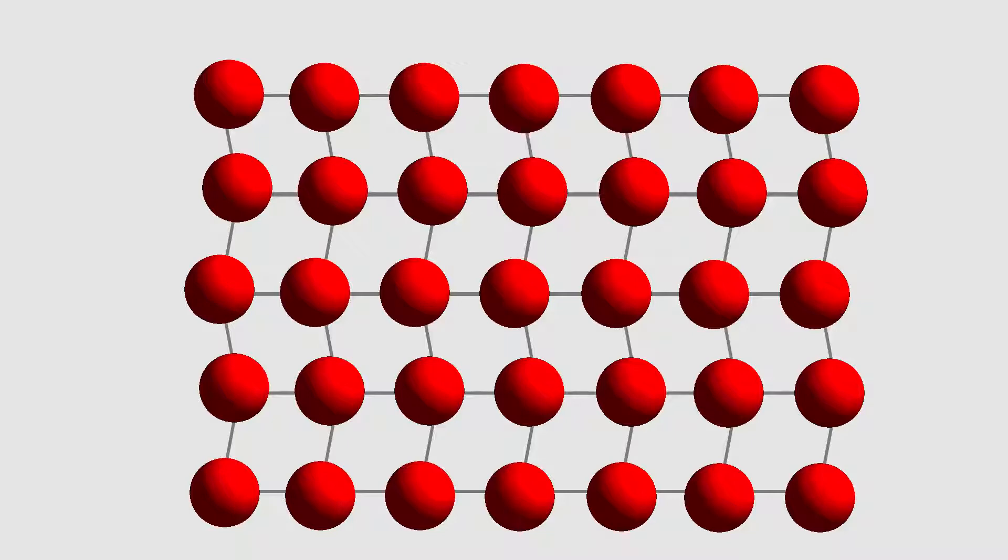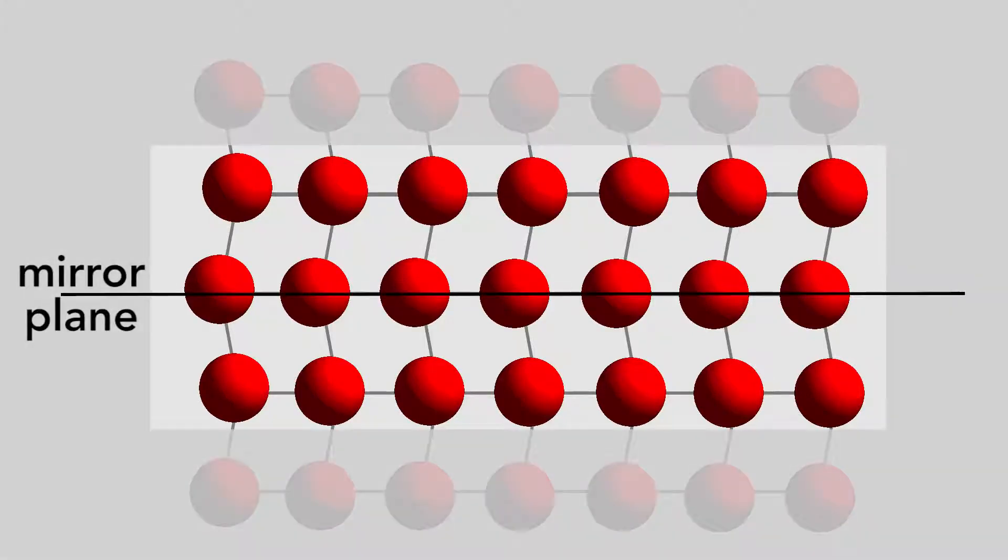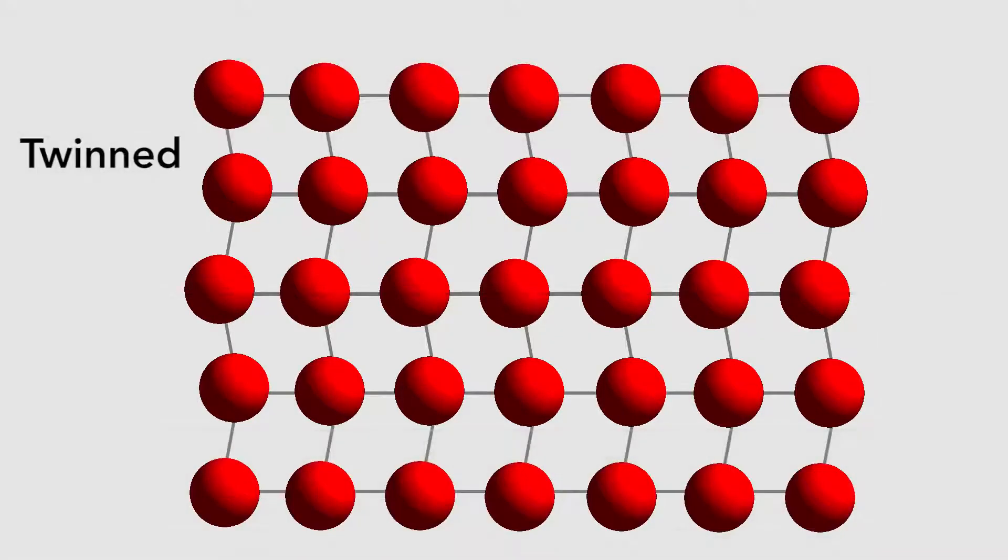It's composed of rhombuses that are mirror images. For example, notice the position of the atoms above and below this line aren't identical, but are reflections of each other. This is called twin structure.